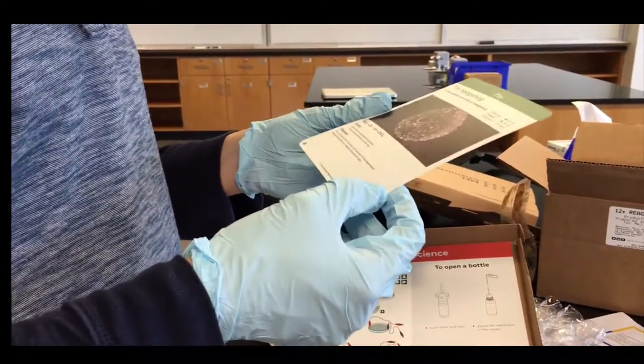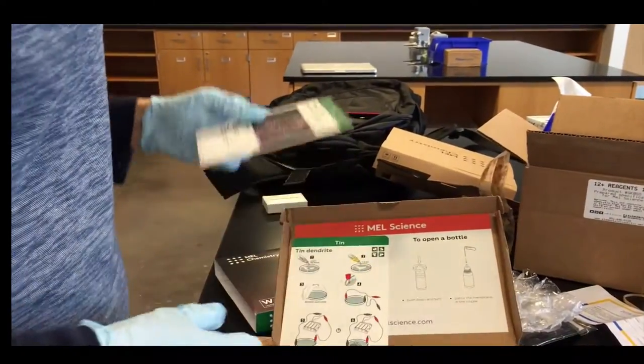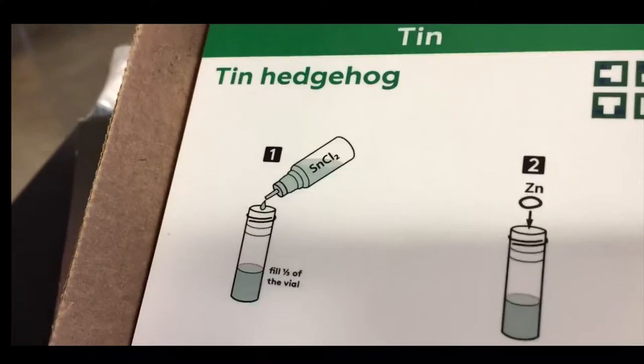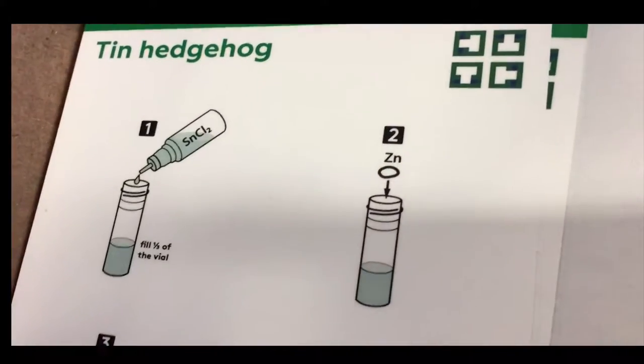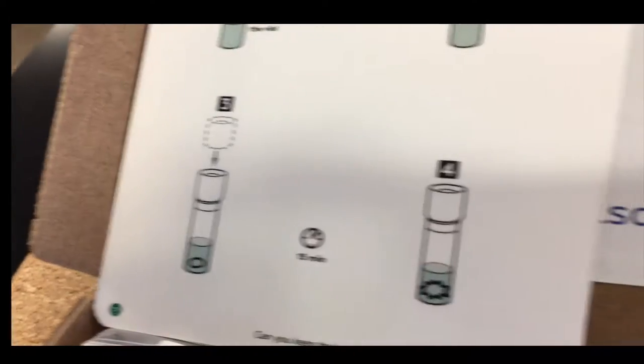The tin hedgehog - reaction between zinc and tin(II) chloride. We're using this instruction card, it's pretty straightforward. Tin hedgehog: fill half the vial, add some zinc, put the cap on, incubate. Here we go.